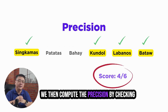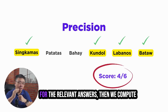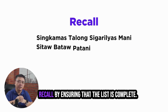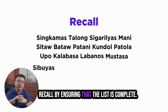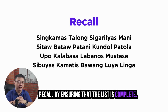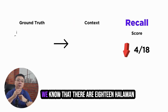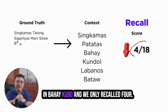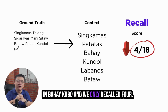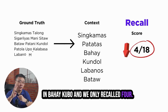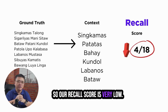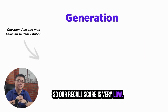We then compute the precision by checking for the relevant answers. Then we compute recall by ensuring that the list is complete. We know that there are 18 halaman in Bahay Kubo and we only recalled 4, so our recall score is very low.